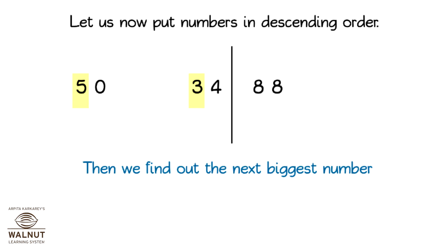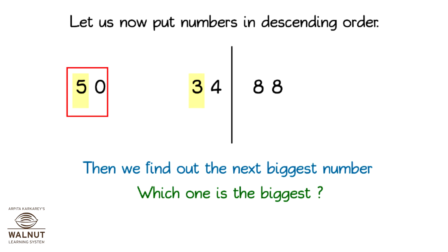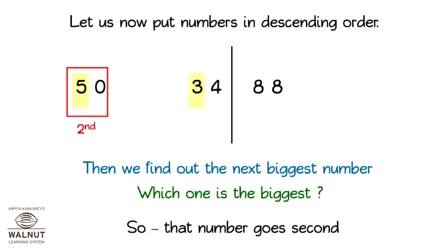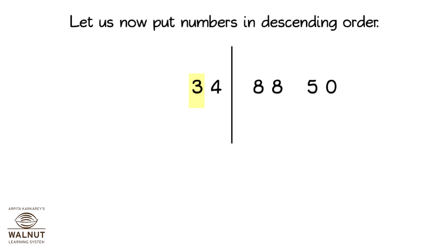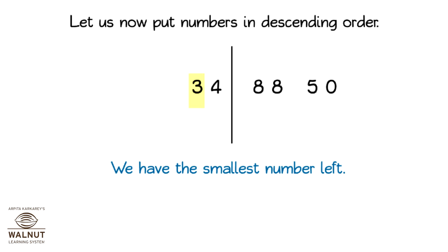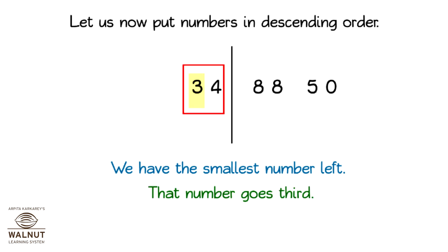Then, we find out the next biggest number. Which one is the biggest? 50. So, that number goes second. We have the smallest number left. That number goes third.